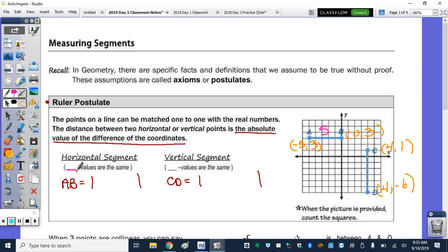The y values are the same. So we look over here in this horizontal segment, we have negative 5, 3, 0, 3. So we have run, but we have no rise, if you think of slope. So it says here, by definition, the length is the absolute value of the difference of the coordinates.